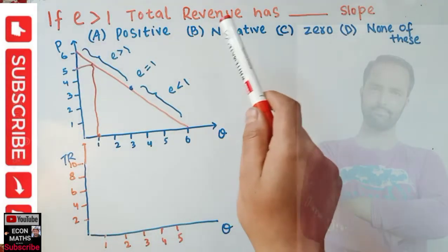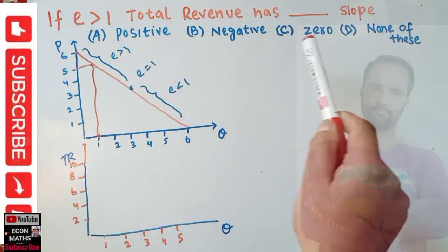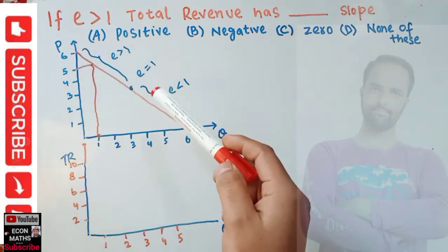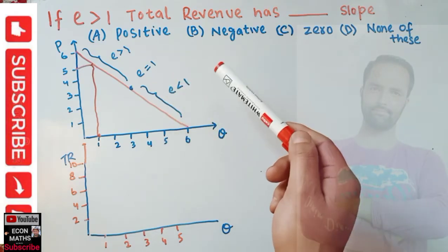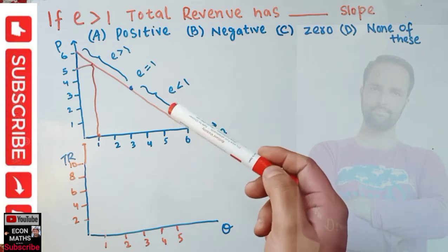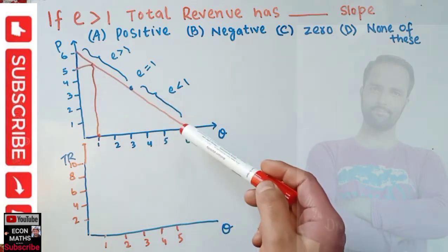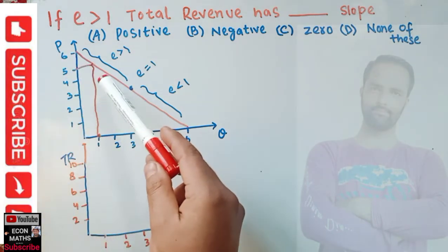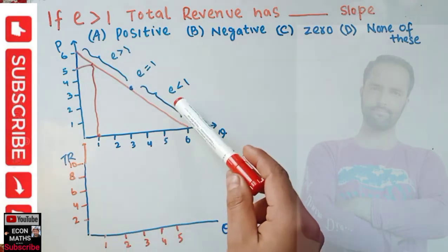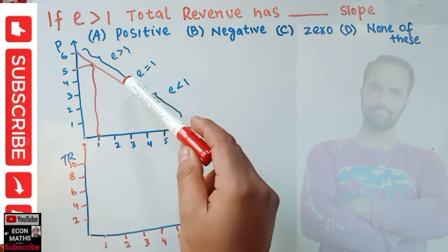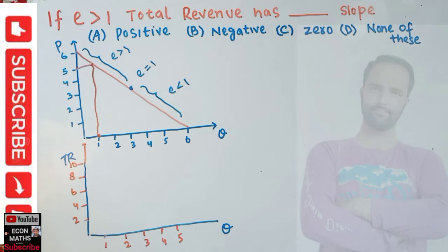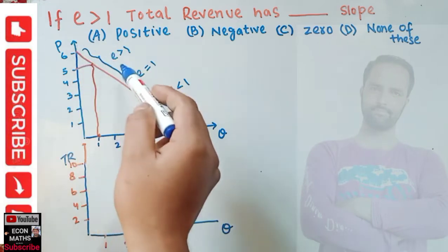If elasticity is greater than one, total revenue has a slope that is positive, negative, zero, or none of these? To find this, we use the linear demand curve. As explained in an earlier video, elasticity along a demand curve changes — it is not constant. The upper half segment of the demand curve has elasticity greater than one, the lower half has elasticity less than one, and at the midpoint elasticity equals one. Now let us see what happens to total revenue when elasticity is greater than one.